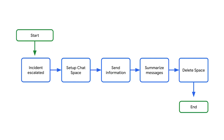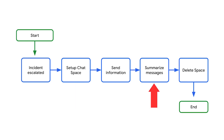To implement this, we will use the Google Chat API to create a Google Chat space, add the relevant members, share information about the incident, create a summary of the chat messages using Vertex AI, and once the problem is solved, the created space will be deleted.